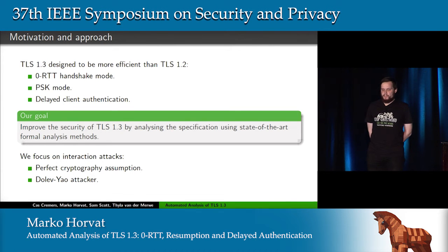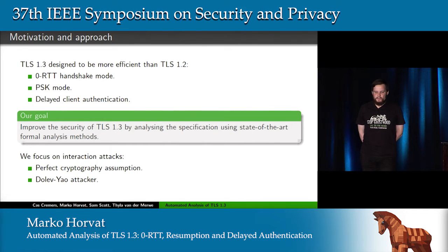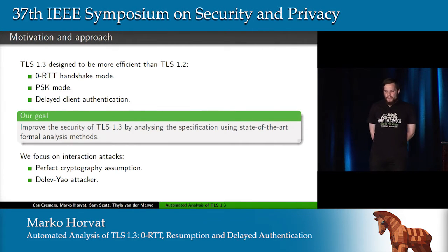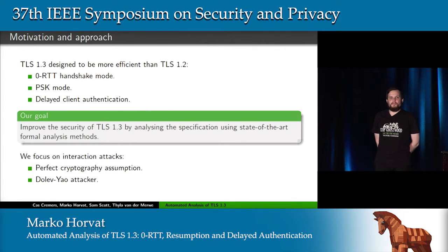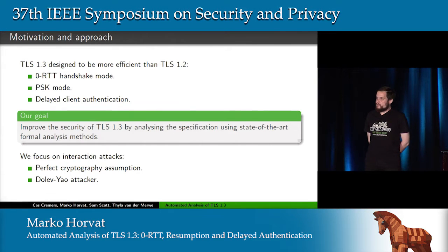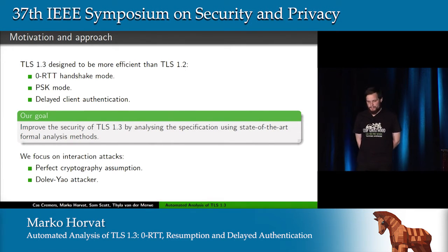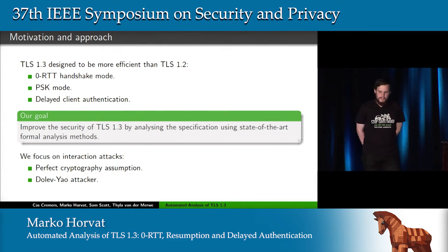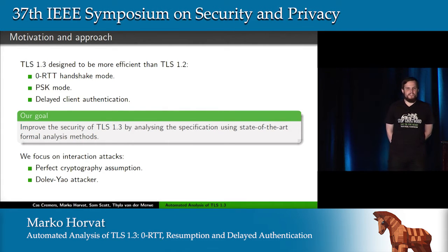Our goal was to improve the security of TLS 1.3 by analyzing its specification using state-of-the-art formal analysis methods and tools, focusing on interaction attacks. We assume that cryptography is perfect or black box — either you have a key and can encrypt, decrypt, and sign messages, or you don't. We assume a Dolev-Yao style attacker who can position himself in the middle of a connection, eavesdrop on, tamper with, and inject messages, as well as corrupt the long-term secret keys of protocol participants not directly involved in the session under attack. Interaction attacks are inadvertently added vulnerabilities exploited due to composition of different handshake modes.